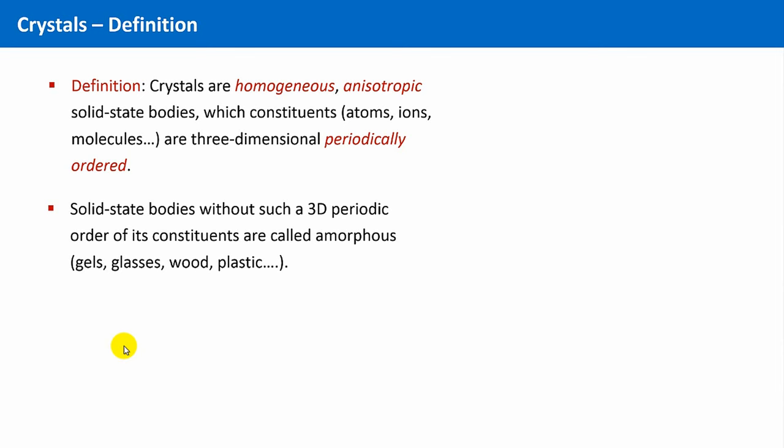In general, this means, concerning the aggregate states of matter, we can divide these into solid states, liquids, and gases. And the solid state, in turn, can be subdivided into the two main categories, amorphous and crystalline.